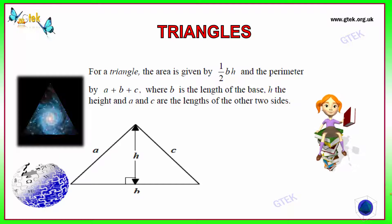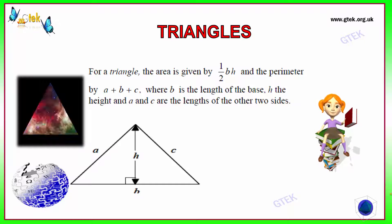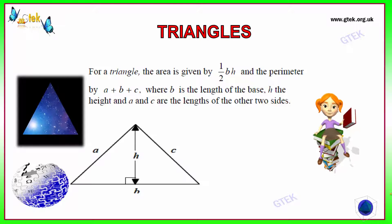So, for the area of the triangle, we should be using the formula half into BH. And the perimeter is A, B and C.